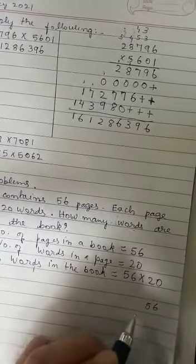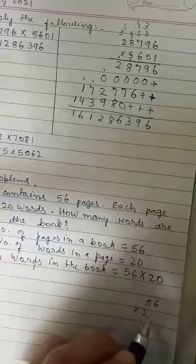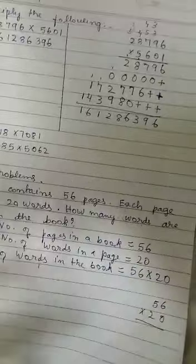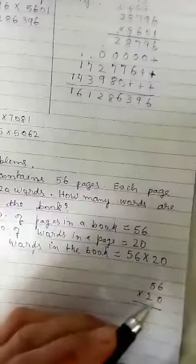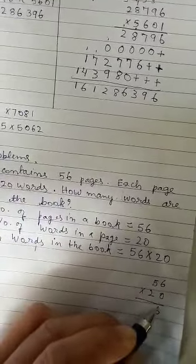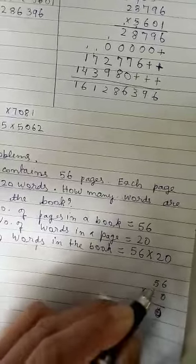56 into 20. So I hope by now you know how to multiply. Here the numbers are small, we can do it directly. 0 into 6, 0. 0 into 5, 0.